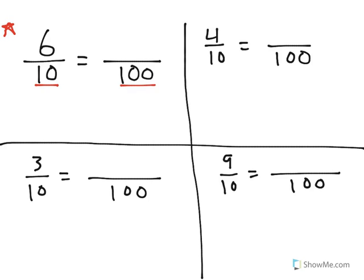I can see I have two numbers in the denominator, 10 and 100. So I'm going to ask myself, how did I get from 10 to 100?